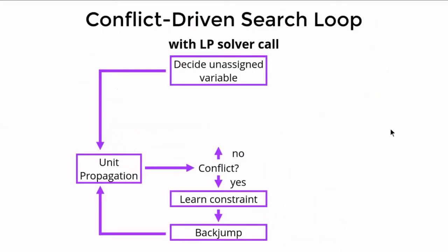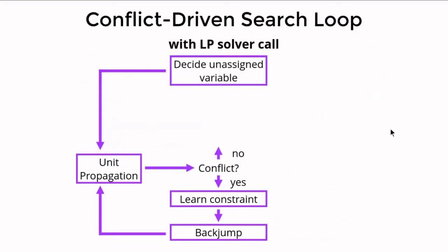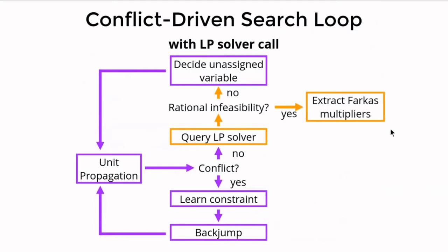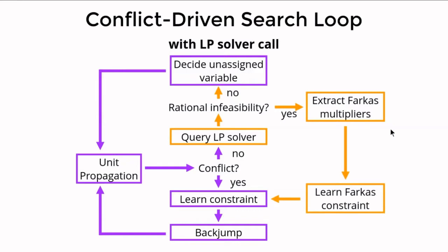Our integration is simple: if no conflict happened before deciding a new variable, we run the LP solver and check whether the constraints are rationally feasible. If they are, search continues as normal. If rationally infeasible, we extract the Farkas multipliers and construct the Farkas constraint. The Farkas constraint is falsified under the partial assignment, so it triggers a conflict, and we learn another constraint to avoid this conflict in the future.